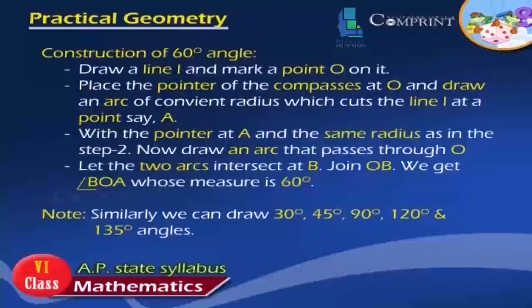Construction of 60 degrees angle: Draw a line L and mark a point O on it. Place the pointer of the compass at O and draw an arc of convenient radius, which cuts the line L at a point, say A. With the pointer at A and the same radius as in step 2, now draw an arc that passes through O. Let the two arcs intersect at B. Join OB. We get angle BOA, whose measure is 60 degrees. Note, similarly, we can draw 30 degrees, 45 degrees, 90 degrees, 120 degrees, and 135 degree angles.